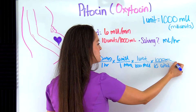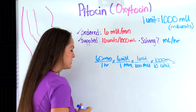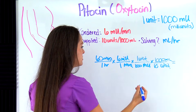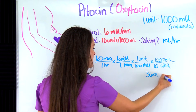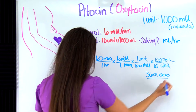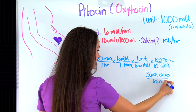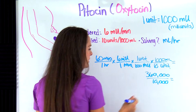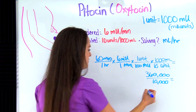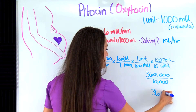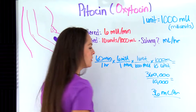Now I can solve: multiply everything at the top, multiply everything at the bottom, then divide. Multiplying everything at the top gives 360,000. Multiplying everything at the bottom gives 10,000. Then 360,000 divided by 10,000 gives 36. So my answer is 36 milliliters per hour.